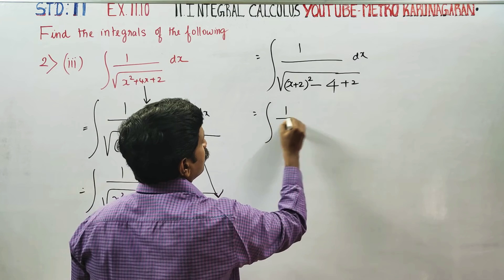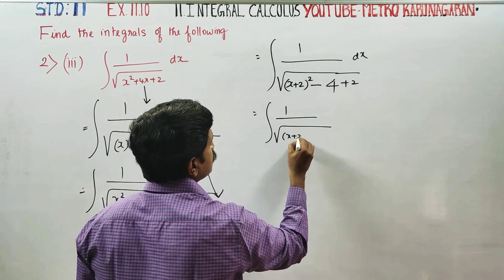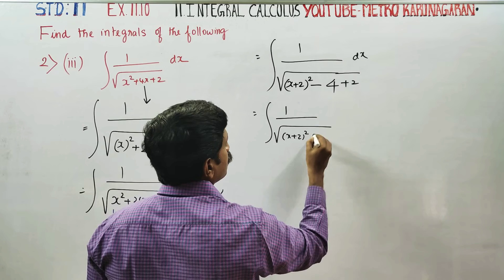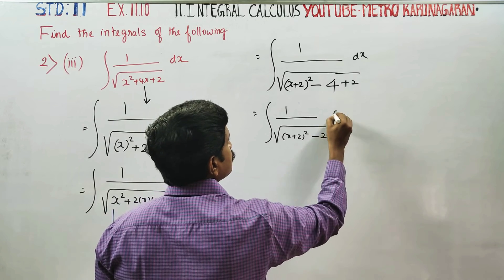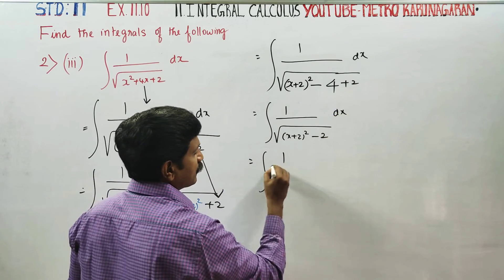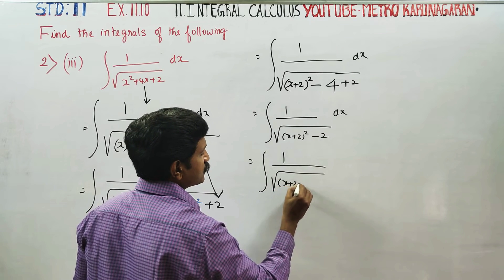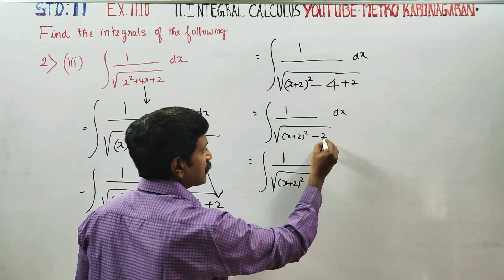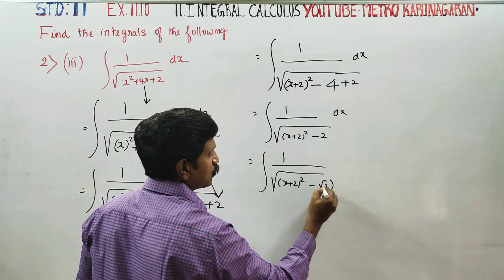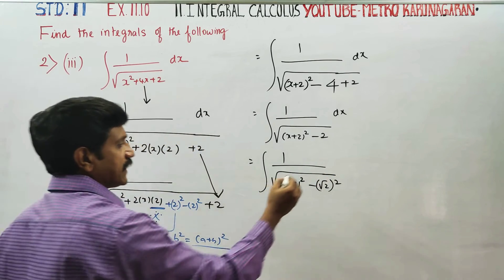Integration of 1 by square root of (x plus 2) whole squared minus 2. Here, 2 can be written as root 2 whole squared. So we have: integration of 1 by square root of (x plus 2) whole squared minus root 2 whole squared, dx.